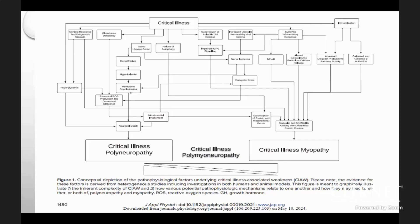Systemic inflammatory response causes necrosis factors to be released, altered sarcoplasmic reticulum calcium release, and increased ubiquitin protease pathway activity. These all lead to muscular myofibrillar atrophy with decreased protein content, resulting in critical illness myopathy.